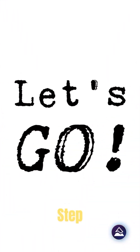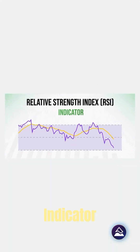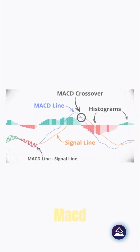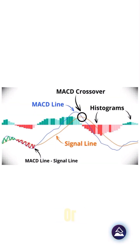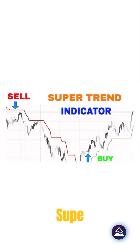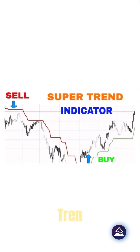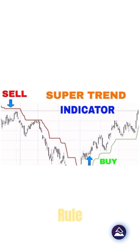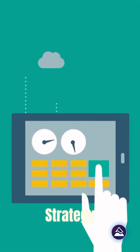We'll go step-by-step through taking any indicator — like RSI, MACD, or Supertrend — and turning it into a rule-based, testable, automated strategy.